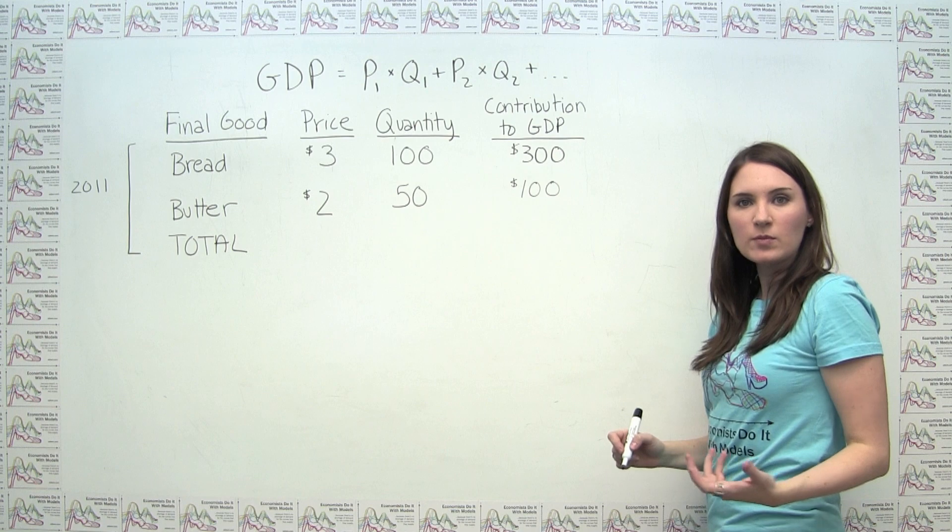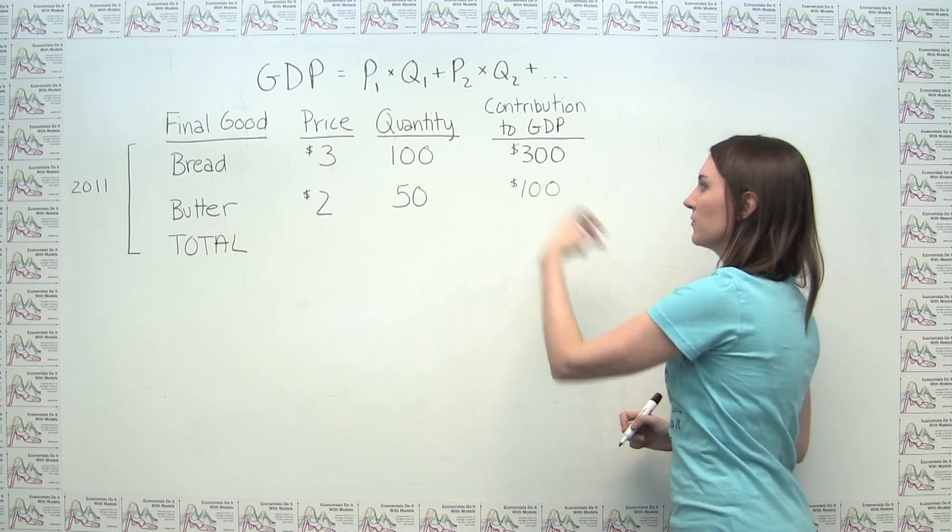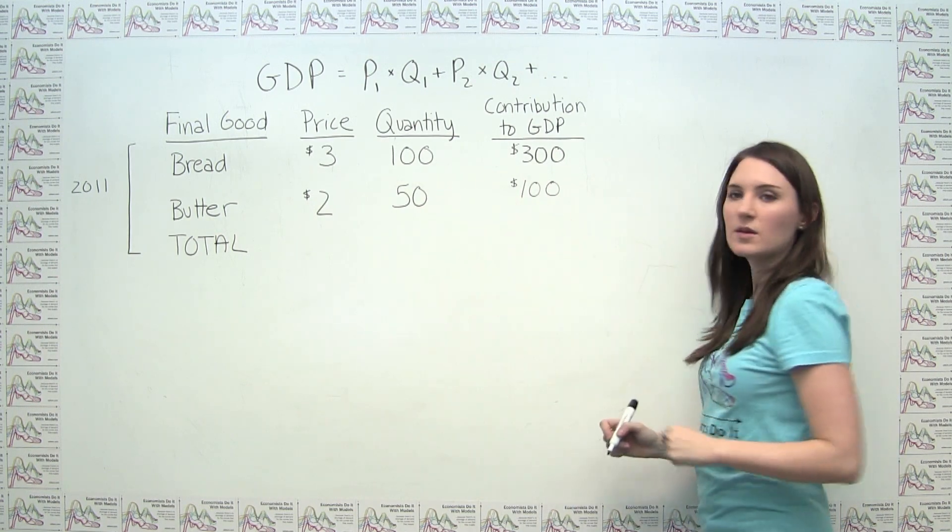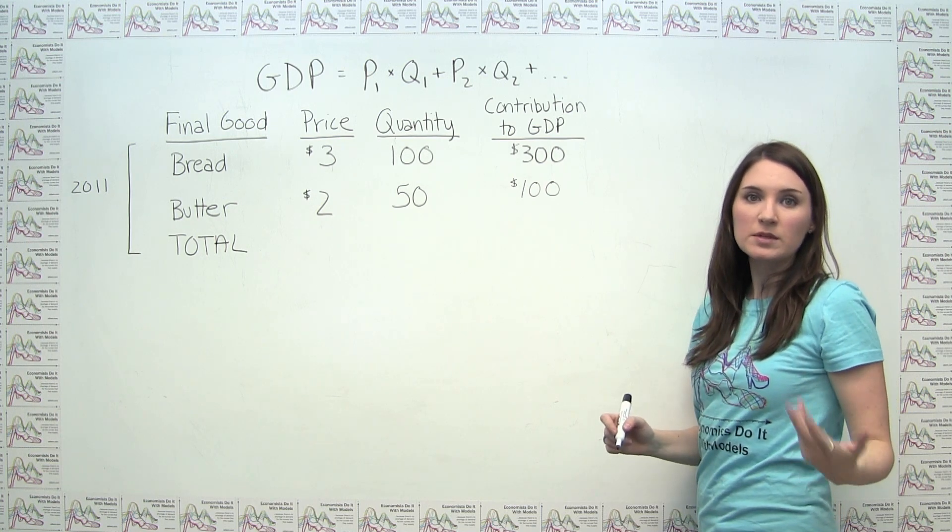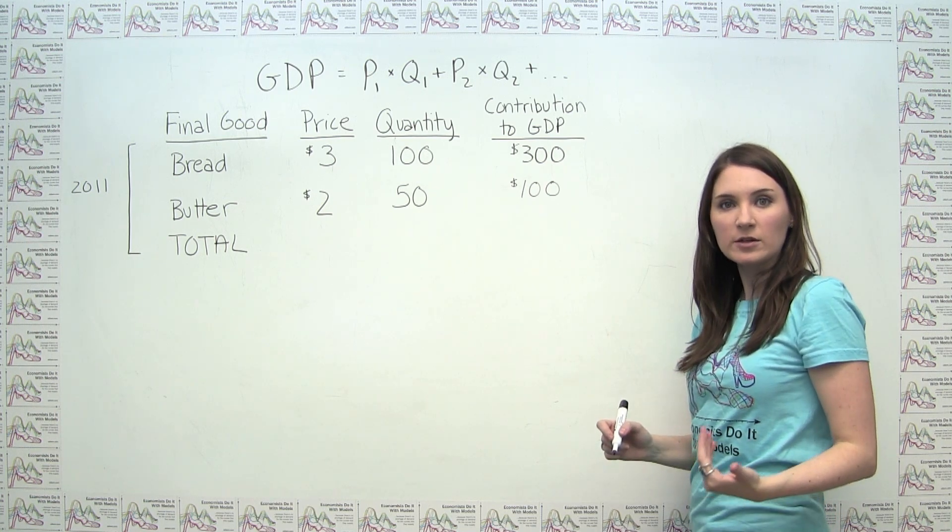If our economy had more than two goods, we would do this for each one of the goods, but here our economy is simple enough that we can just stop, because we said that these are the only goods that we have in our economy.